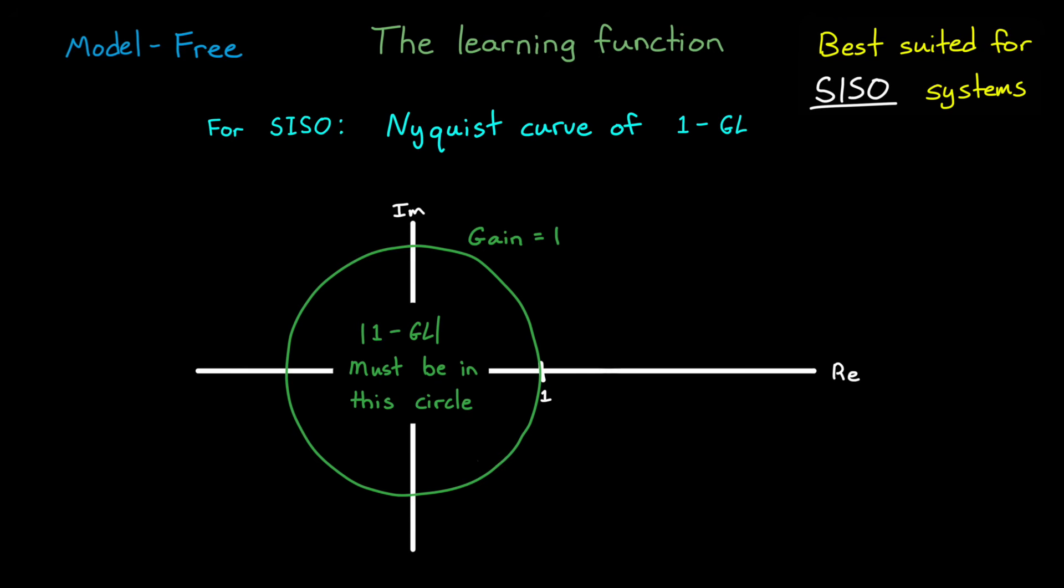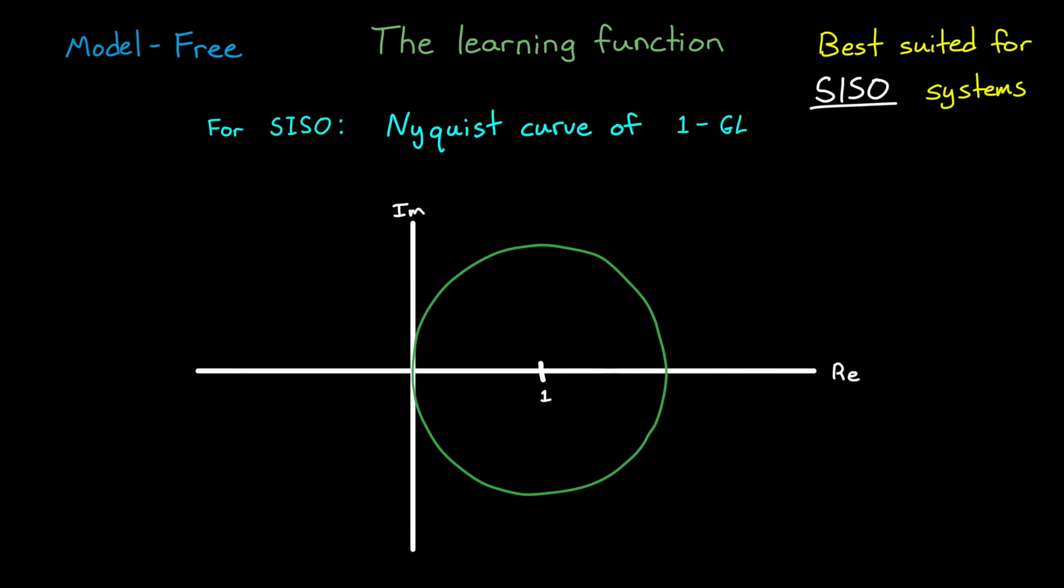and therefore the Nyquist curve of gl itself must be within this circle, which is moved to the right by 1. So that's our requirement.